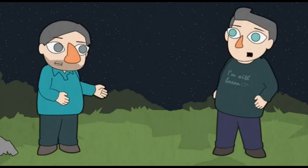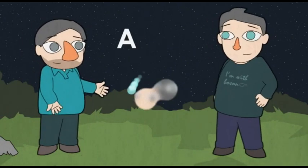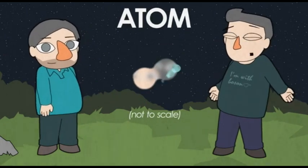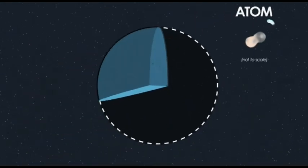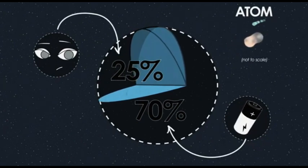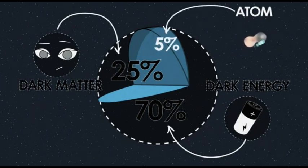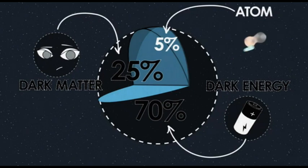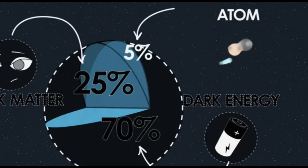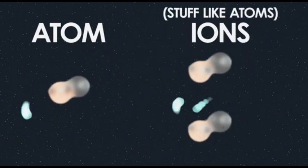Isn't everything made of atoms? Yeah, all the stuff around us is made of atoms. There's the 95% of the universe where we don't really understand what it's made of — dark matter and dark energy — but putting that aside, the 5% of the universe we do understand is all made of atoms, or stuff like atoms: ions, which are atoms with missing or extra electrons.